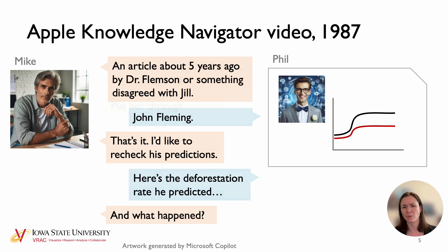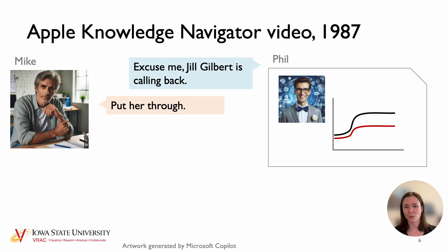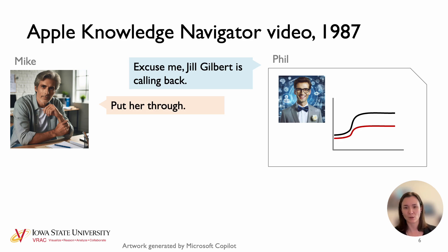Mike asks, and then what happened? Phil interrupts: excuse me, Jill Gilbert is calling back. What's really interesting here is that later in the video, Mike's mom calls during a conversation and Phil knows to screen that call and take a message. In this case, Phil can follow the conversation thread well enough to know that a conversation with Jill is relevant to what they're doing, so Phil interrupts and accepts the call.